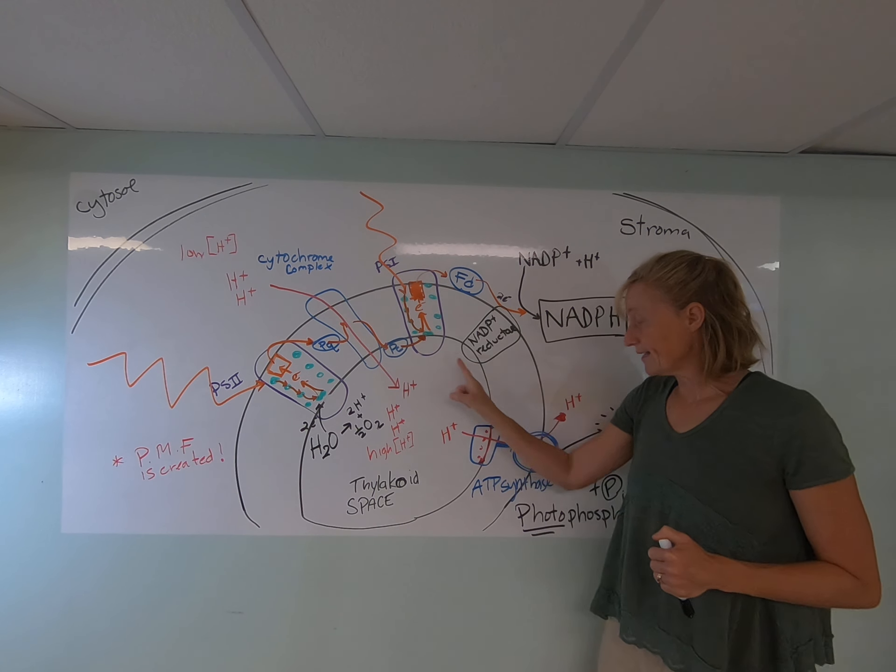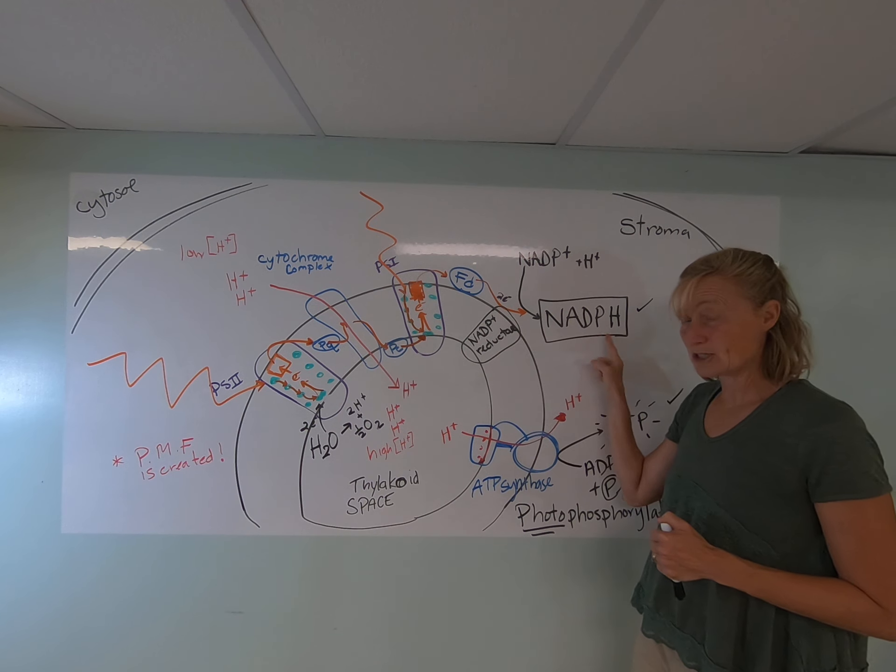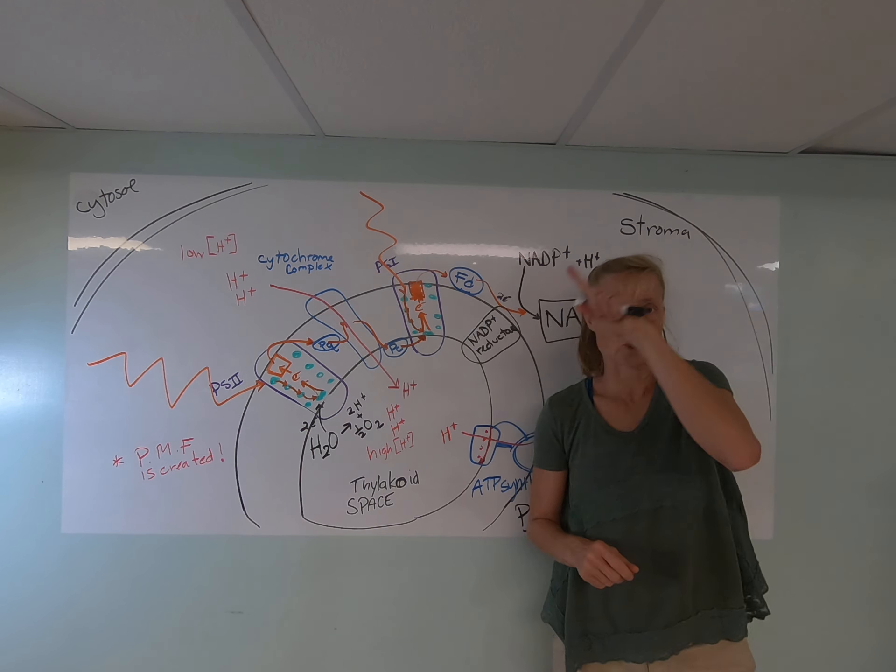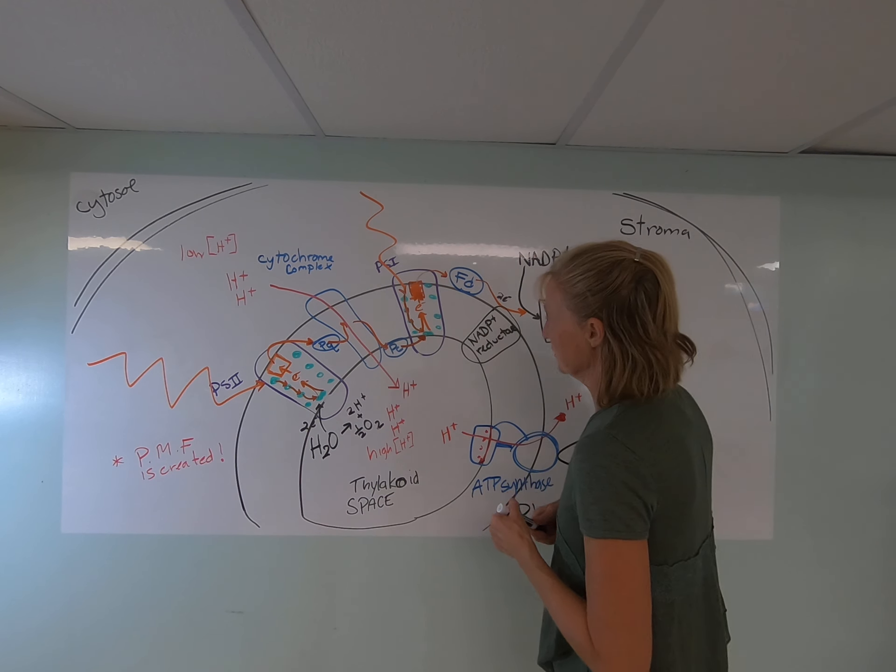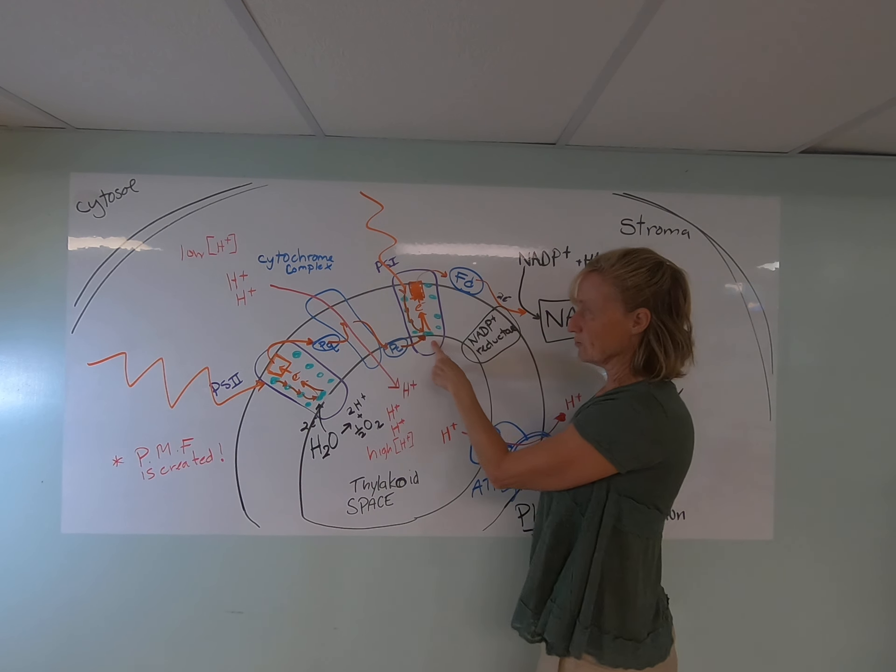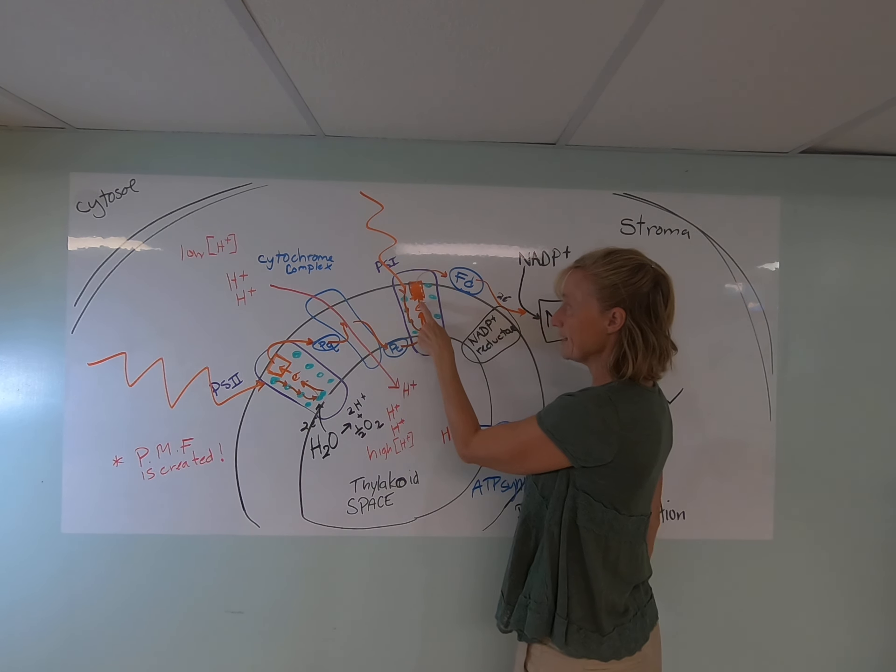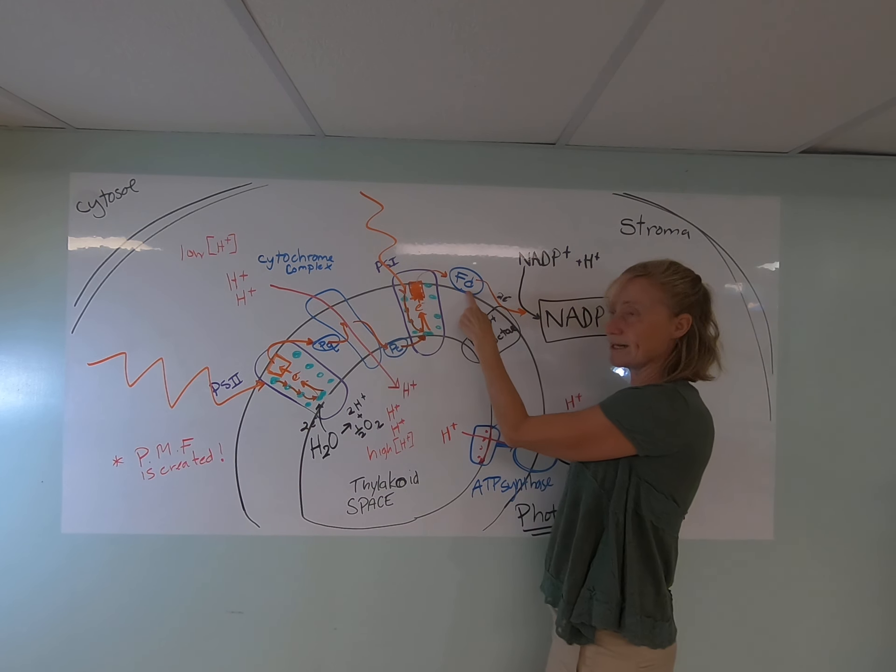It generates ATP, but it doesn't make any NADPH. And the electrons flow in a circle. They don't flow in a line. So how does it work? Well, the electrons that get excited at photosystem I are first excited, donated to this primary electron acceptor, and then they're donated to ferredoxin.